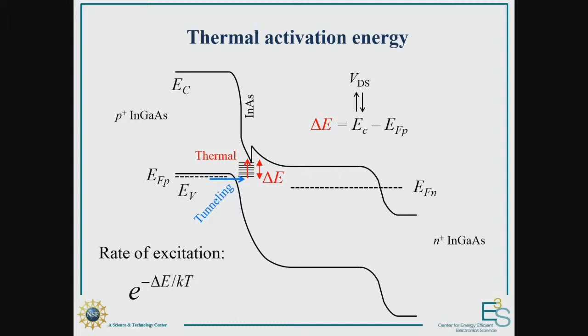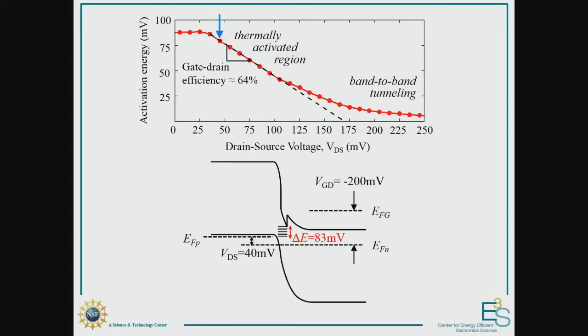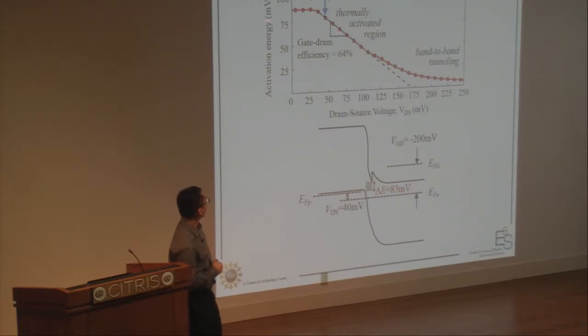And as we change VDS, we expect to move this conduction band up and down, and we should expect to observe a change in this delta E. So if we take our conductance curves and construct a series of Arrhenius plots at these different drain source voltages, then we can extract an activation energy out and plot it as a function of the applied voltage. And this is what I've done. So at the top here, it kind of flattens out because the low-temperature curve hits a current floor.